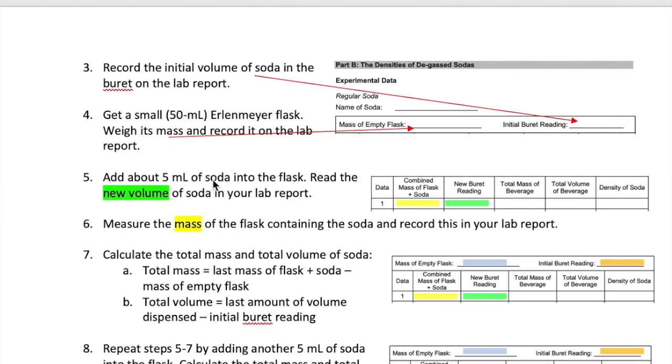Start by dispensing about 5 milliliters of the soda into the glass. Read the volume on the burette and record it in this space marked new burette reading. Then measure the mass of the glass with the soda in it and record it in the space that's marked combined mass of glass and soda.